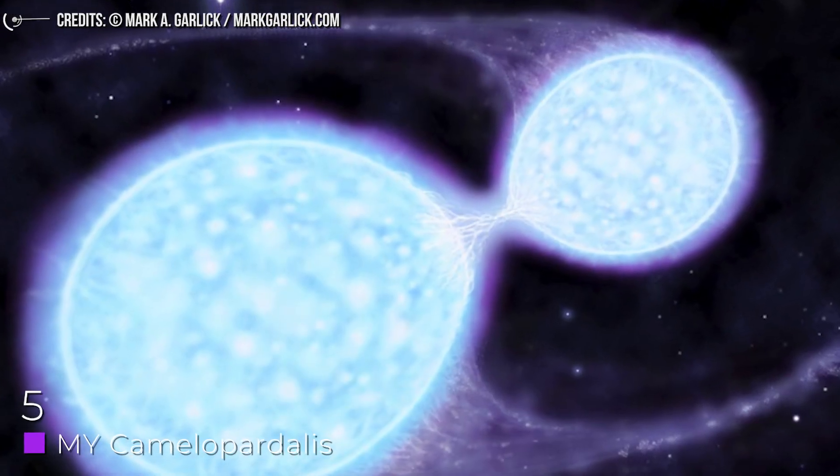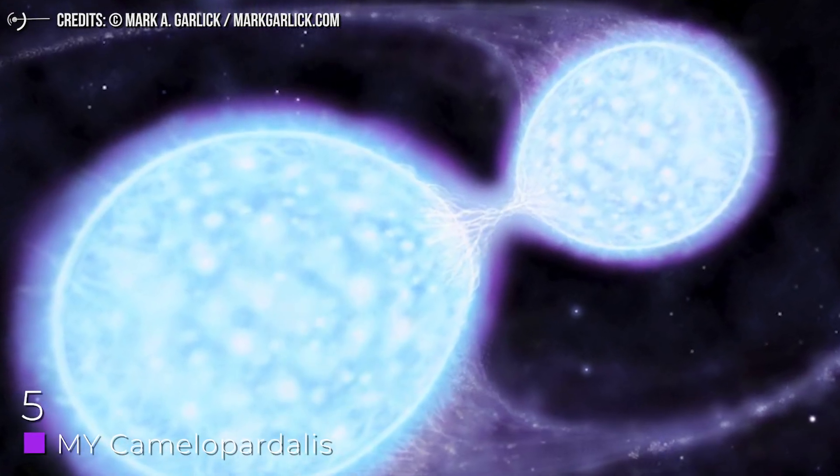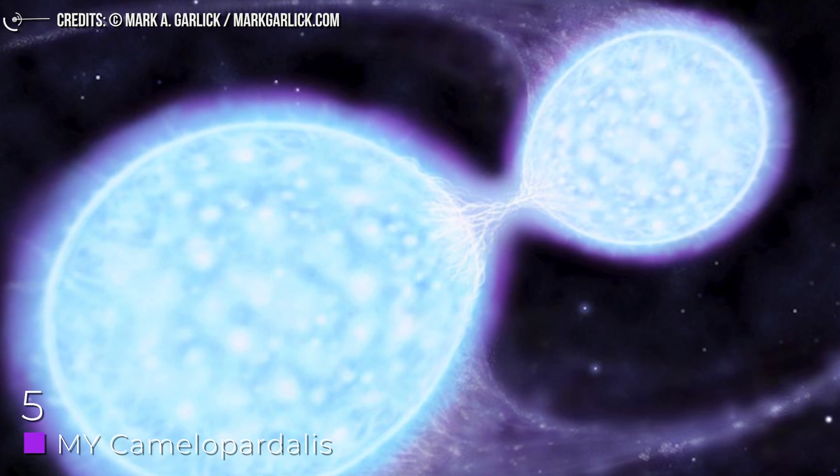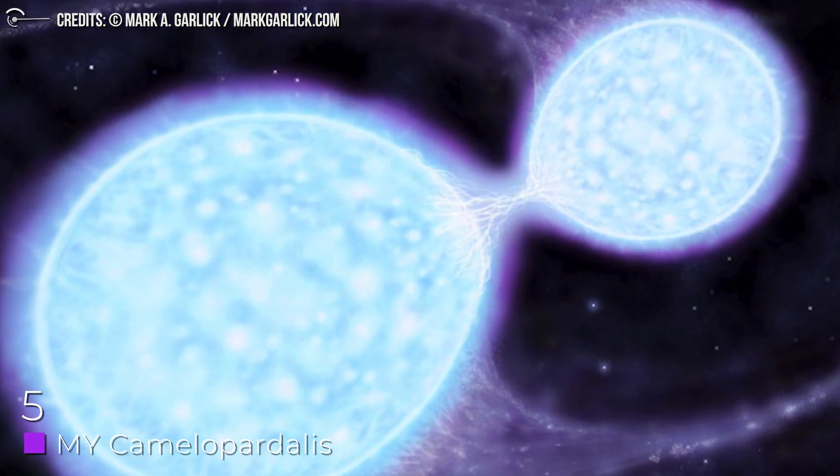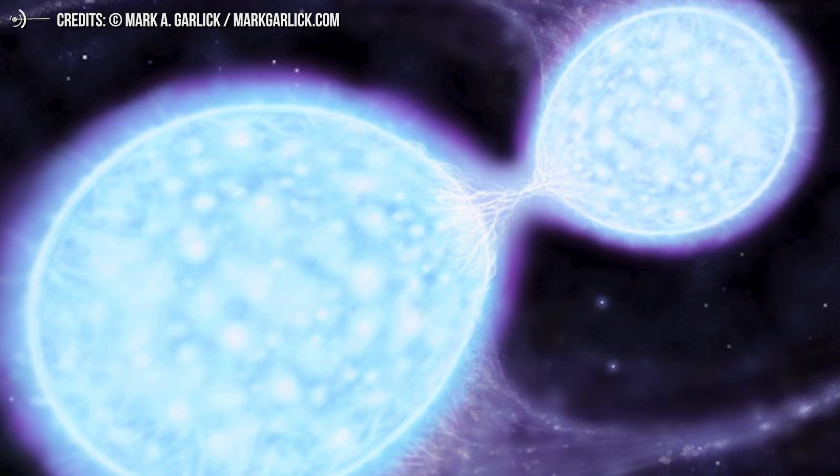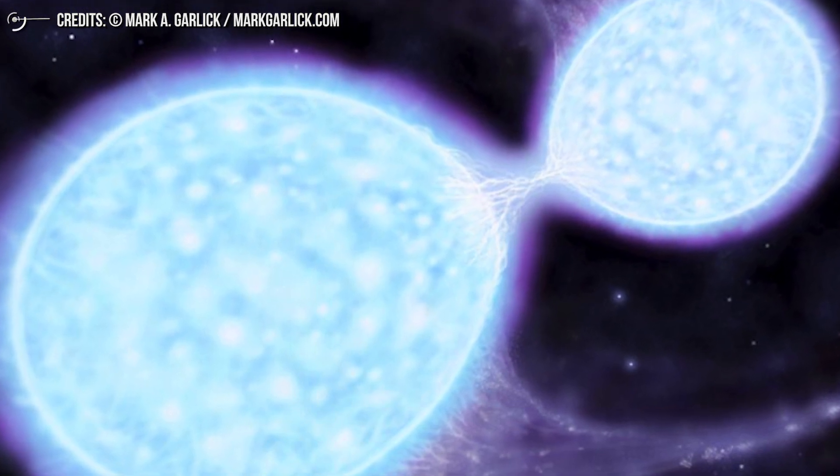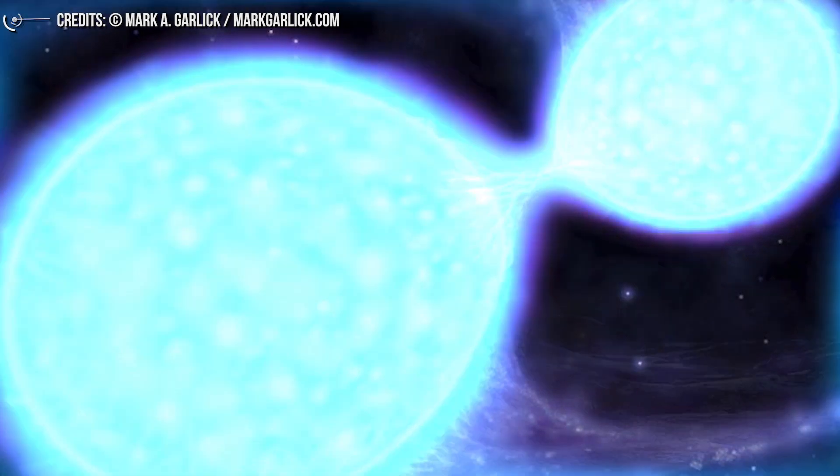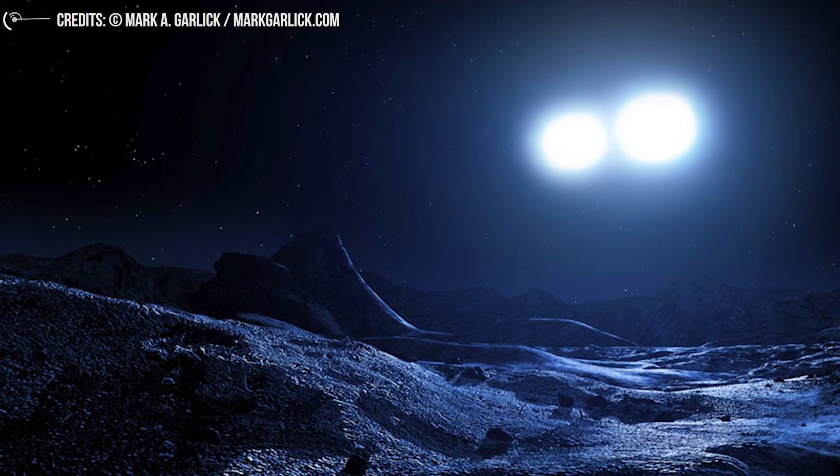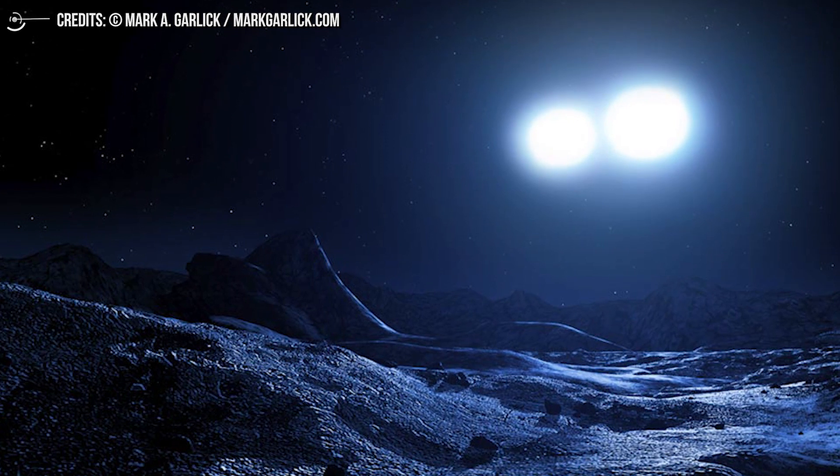Number 5: MY Camelopardalis. A study of the binary system MY Camelopardalis shows that the most massive stars are made up of the merging of smaller stars, as predicted by theoretical models, smaller to bigger. Most of the stars in the Milky Way formed in binary or multiple systems.